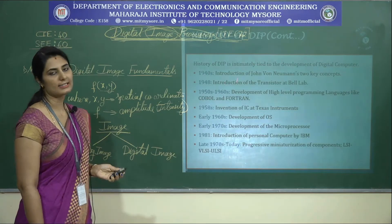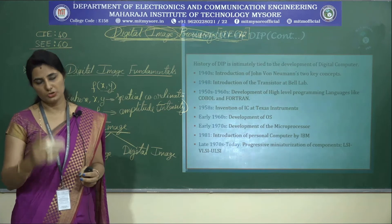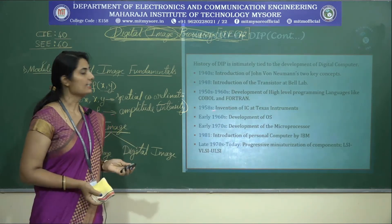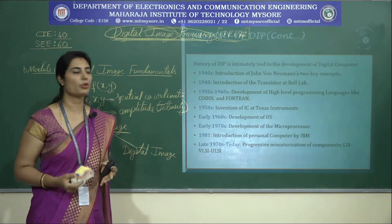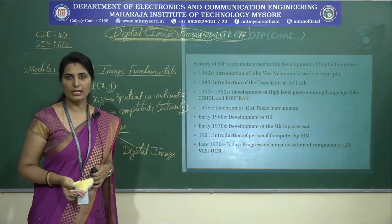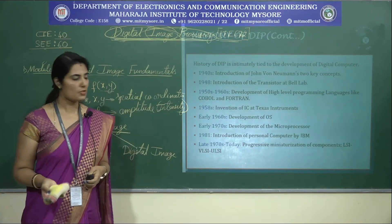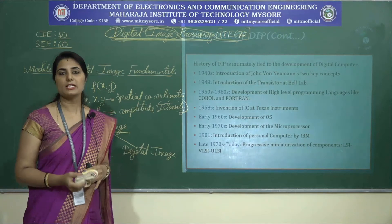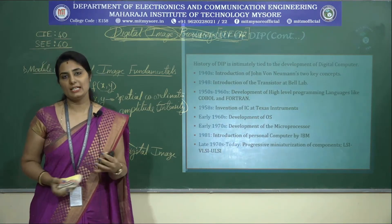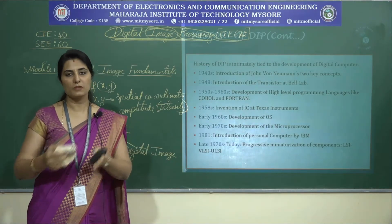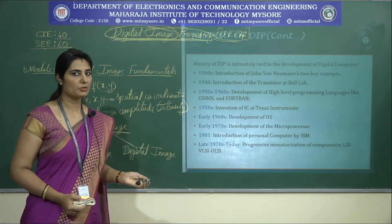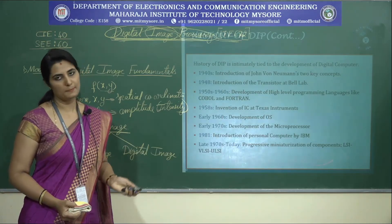In the 1940s, John von Neumann's introduction of key concepts was the first stepping stone toward digital computing. In 1948, transistors were introduced at Bell Laboratories. In the 1950s to 60s, high-level languages like Fortran and Cobol were developed. In 1958, ICs were invented at Texas Instruments. In early 1960s, operating systems were developed. In early 1970s, the microprocessor was developed. In 1981, IBM introduced personal computers. From the late 1970s to today, progressive miniaturization from large-scale integration to very large-scale to ultra large-scale integration — all these contributed to digital image processing.